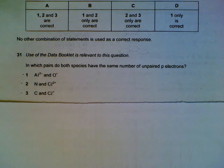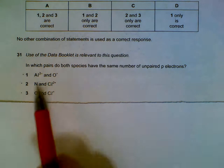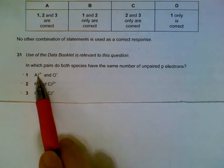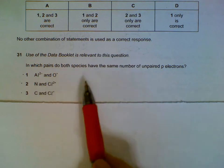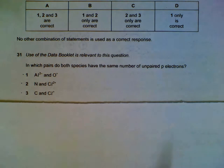Number 31: Which pairs of both species have the same number of unpaired p electrons? One way you can do it is actually calculate the number of electrons they have and then write out the configuration, calculate number of electrons O⁺ has and write out the configuration, and then do a comparison. I'll show you another way that you can do using the periodic table.